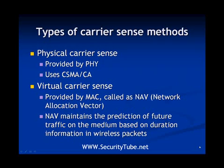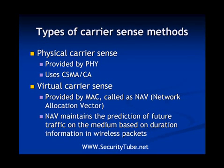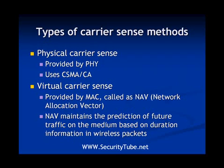IEEE 802.11 wireless LAN provides two types of carrier sense methods. The first is physical carrier sense, in which the physical layer takes part and uses basic CSMA/CA as the carrier sense. The second method is virtual carrier sense, which also enables prioritization on wireless media.